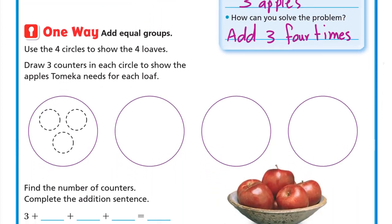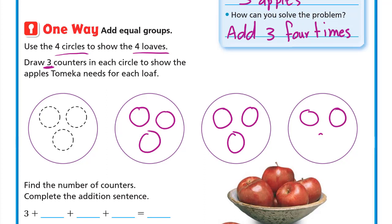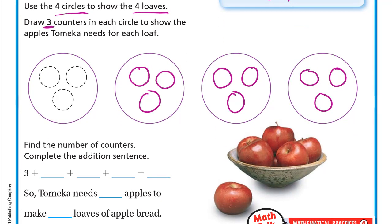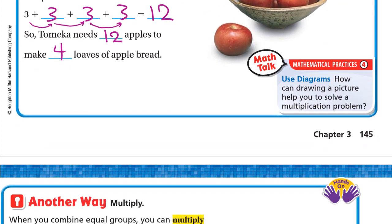Here is one way: we will use four circles to show the four loaves and draw three counters in each circle to show the apples Tomeka needs for each loaf — three, three, three, three. So let's see how many in total: three plus three plus three plus three. Three plus three is six, plus three is nine, nine plus three is twelve. So Tomeka needs twelve apples to make four loaves of apple bread.